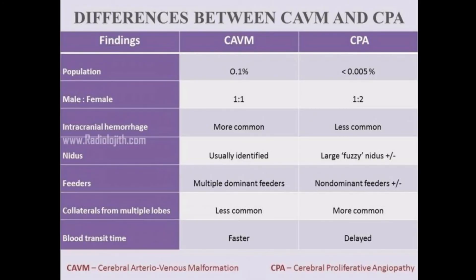But when there are multiple arteriovenous connections due to multiple non-dominant arterial feeders and draining veins associated with intermingled normal brain, then we can call it cerebral proliferative angiopathy. There will be no typical nidus angiographically.